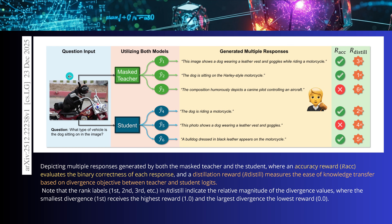A simple example: given the question 'What type of vehicle is the dog sitting on in the image?', the masked teacher generates multiple responses. Two may be semantically accurate, but the masked teacher can also hallucinate — for example saying 'aircraft' instead of 'motorcycle.' Those hallucinations must be filtered out. The accuracy reward evaluates the binary correctness of each response, while the distillation reward matches the ease of knowledge transfer based on the divergence between teacher and student logits.